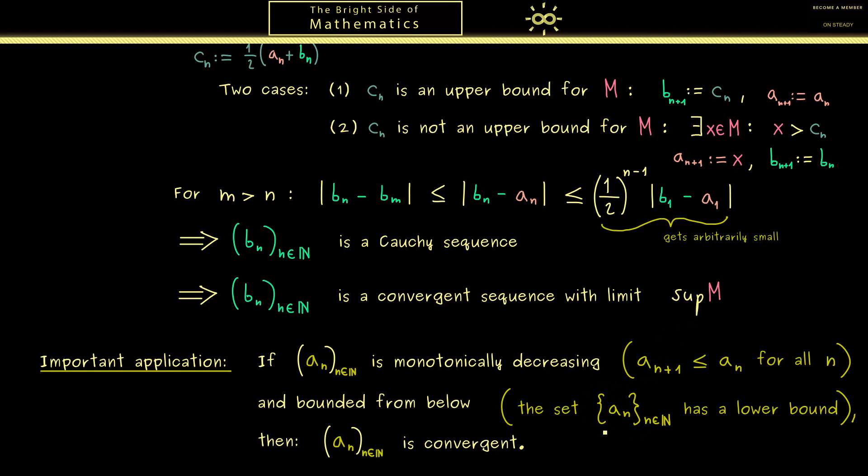However if we use the existence of the infimum we get another criterion. Of course it's very similar. There we just need a monotonically increasing sequence, which is bounded from above. And then we can also conclude that we have a convergent sequence.